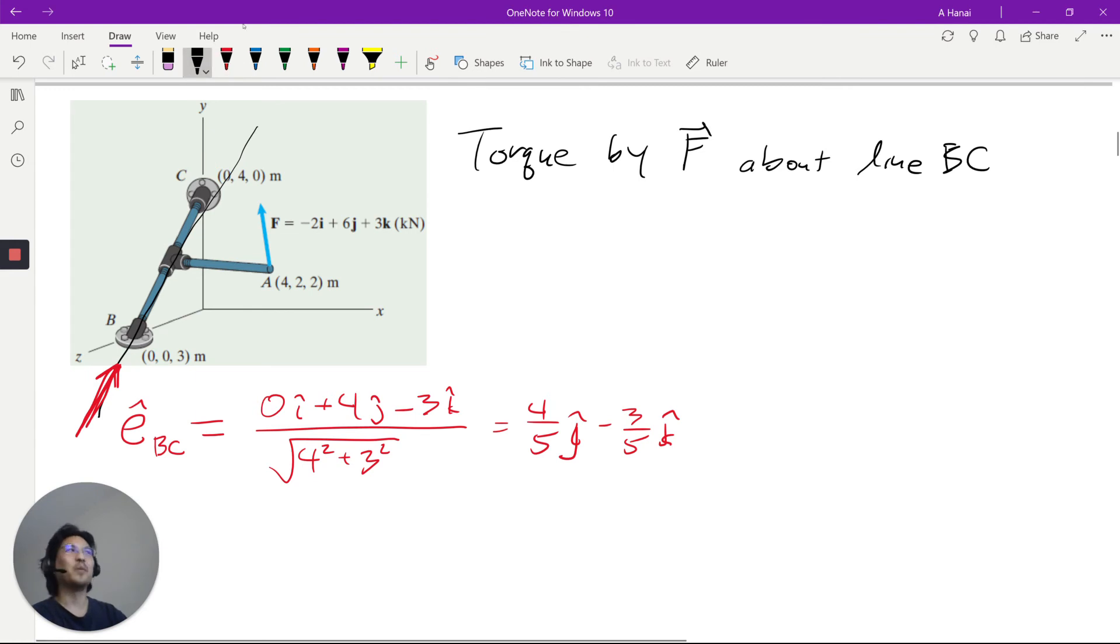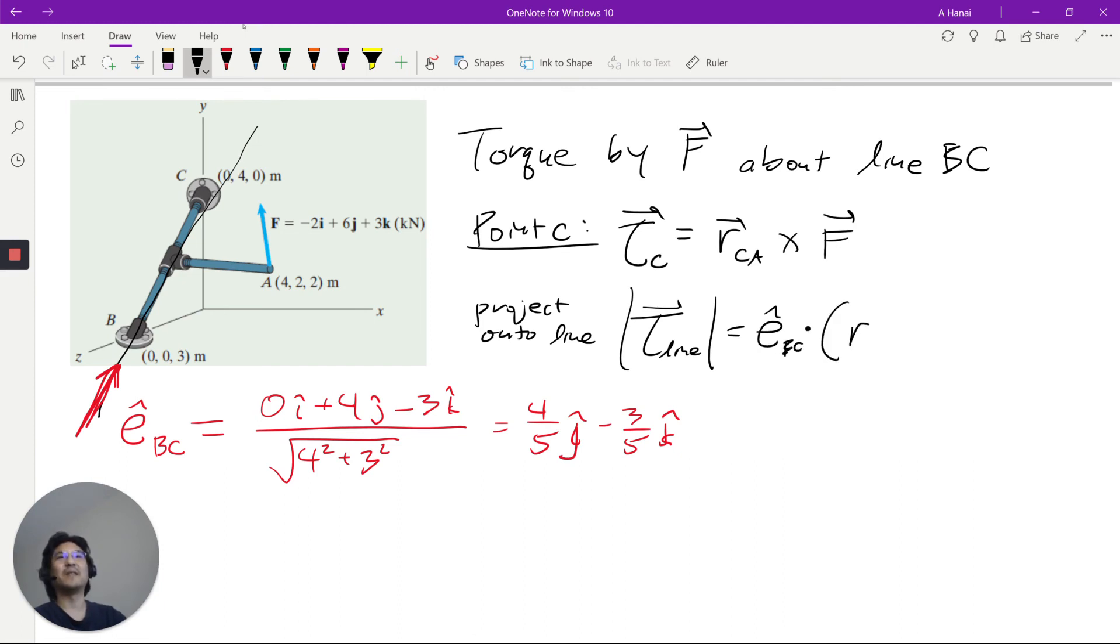So, we just pick a point, any point. Let's say point C. So, let's say point C. So, the torque about point C is R from C to A cross F. Then, we project that onto the line. The line looks like, I'll just write the magnitude here. E dot R cross F. So, if you want to do this operation, you can do it as a mixed, triple product.